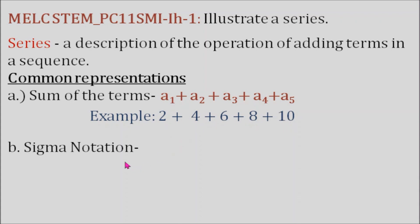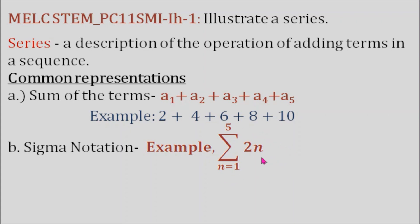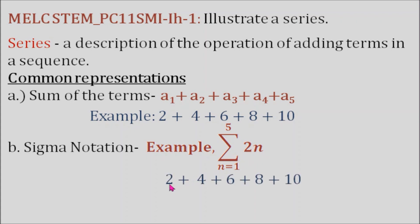The other common representation is sigma notation. This notation is read as the sum of the terms 2n where n is from 1 to 5. So if we are going to substitute n with 1, that's 2 times 1, which gives us 2.